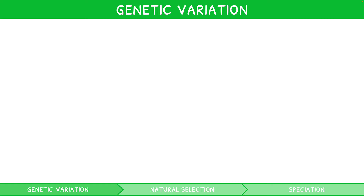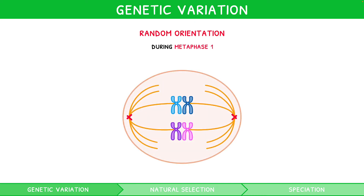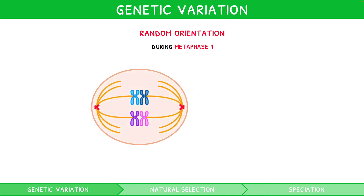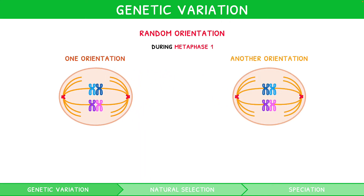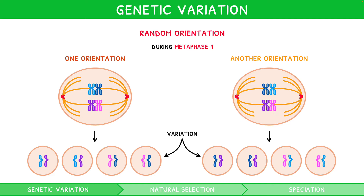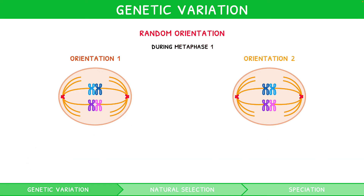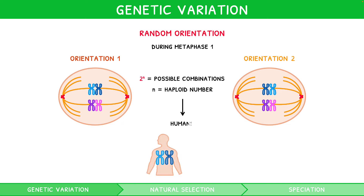The second method of introducing variation is random orientation. During metaphase 1, the homologous chromosomes within each bivalent are attached by spindle fibres to either pole. Depending on the random orientation of each bivalent, the homologous chromosome which travels to either pole can vary. Since each homologous chromosome is genetically different, this introduces variation. It is important to note that the orientation of one bivalent does not impact another, and the formula 2 to the power of n can be used to deduce the number of combinations of random orientation, where n is the haploid number. For example, in humans this would produce 2 to the power of 23, over 8 million combinations.